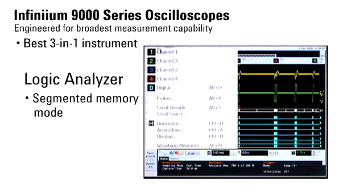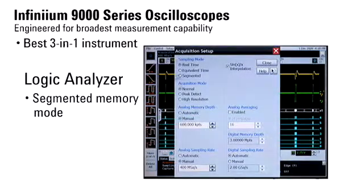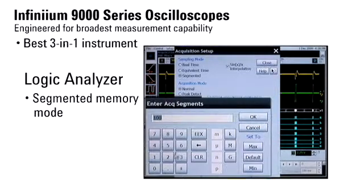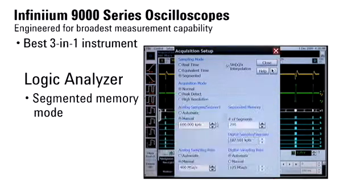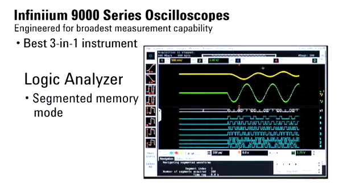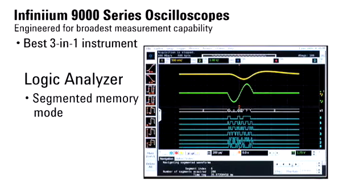Segmented memory mode efficiently preserves the scope's acquisition memory to capture bursts of signal activity separated by long dead times. Agilent offers the only MSOs with segmented memory across both digital and analog channels. Scroll through captured segments to identify areas of interest.